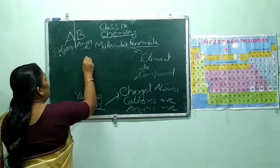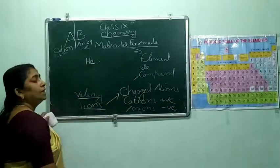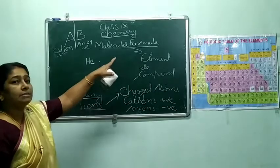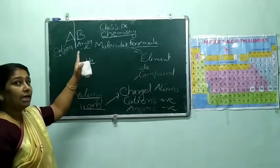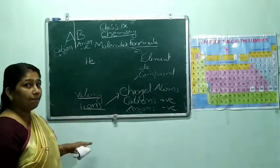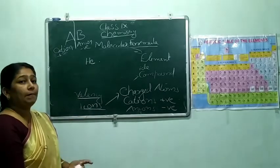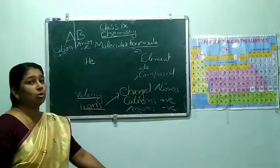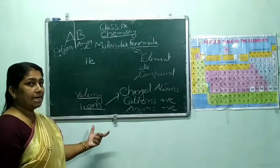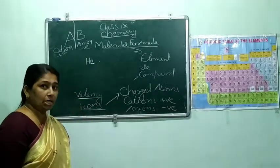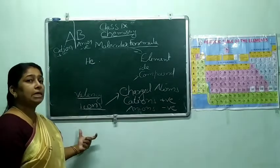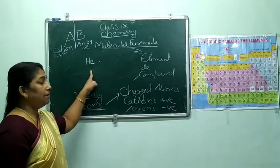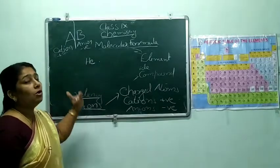For example, helium is monoatomic because helium comes under the noble gas category. Helium, neon, argon, krypton — all these are in the periodic table in the extreme right, that is in the 18th column. Their valency is zero so they exist as monoatomic — only one atom will be there.